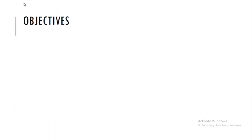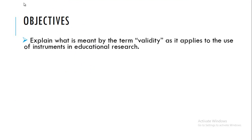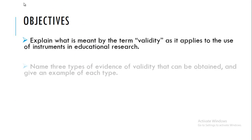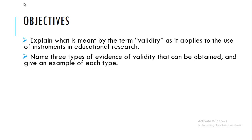The objectives of this report are: Explain what is meant by the term validity as it applies to the use of instruments in educational research; Name three types of evidence of validity that can be obtained, and give an example of each type.